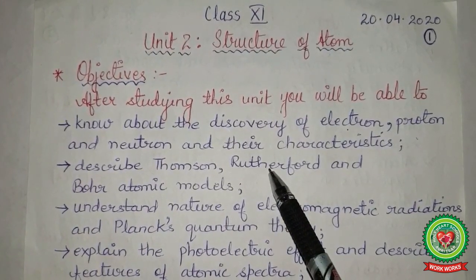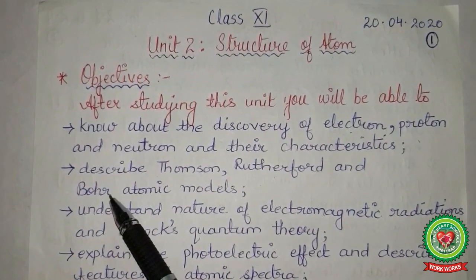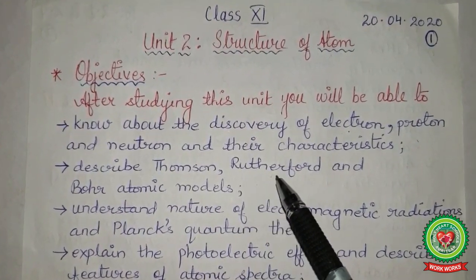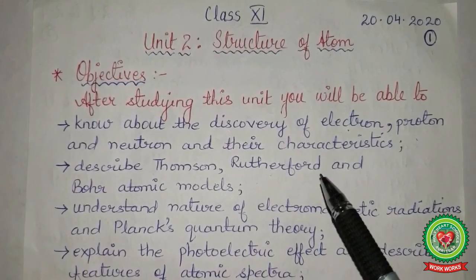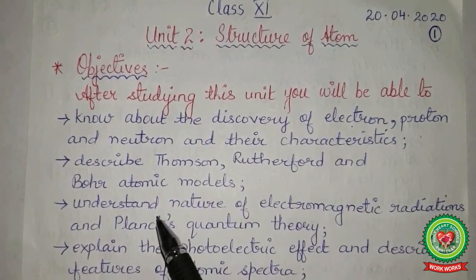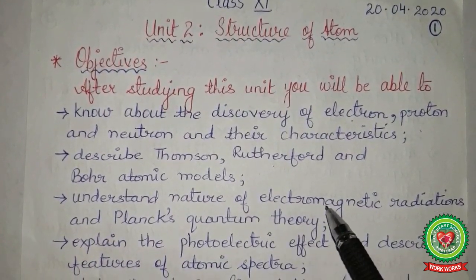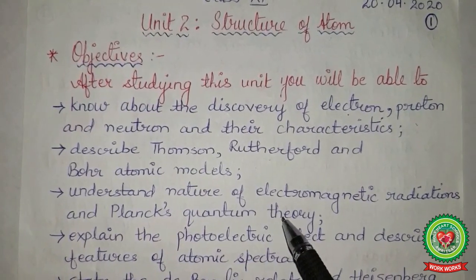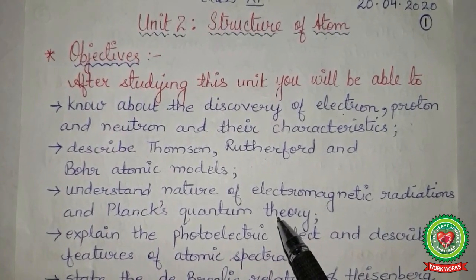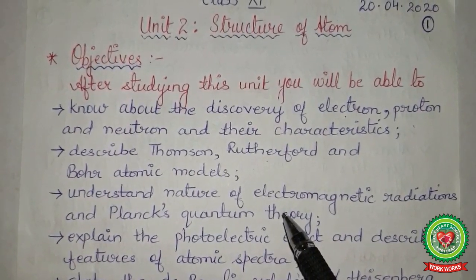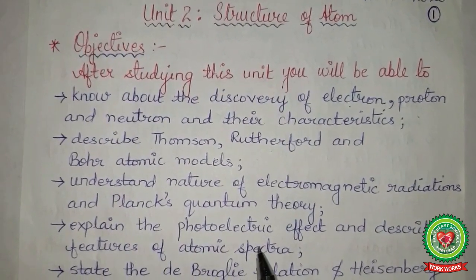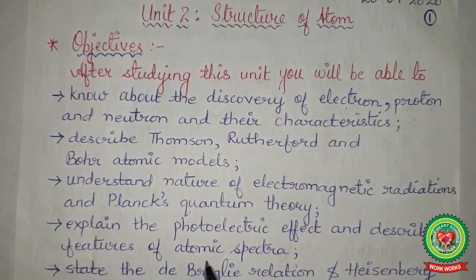The more satisfactory structure of atom was given by Bohr, and we have studied the Bohr atomic model — including how to calculate the radius of orbits and the energy of each orbit. We then understood the nature of electromagnetic radiations and Planck's quantum theory, including the dual nature of radiation: wave-like and particle-like.